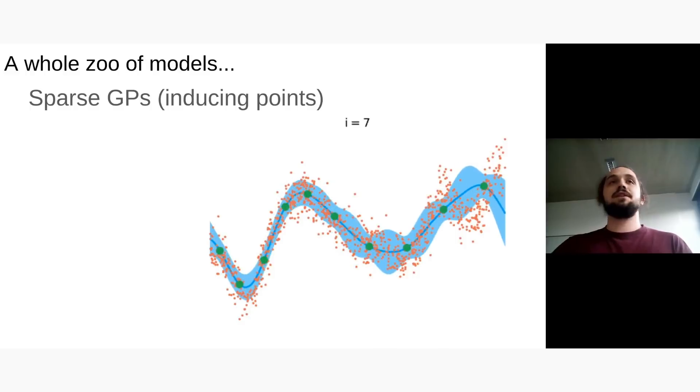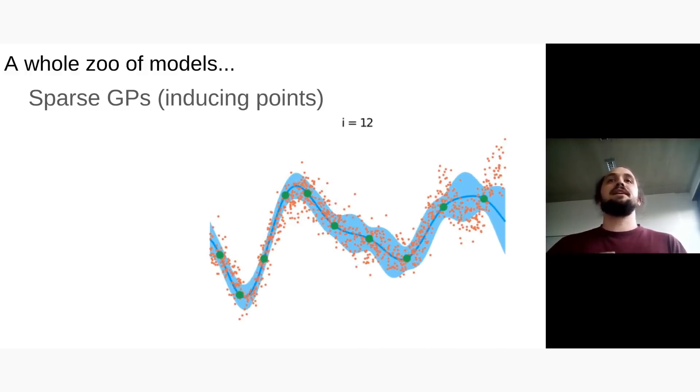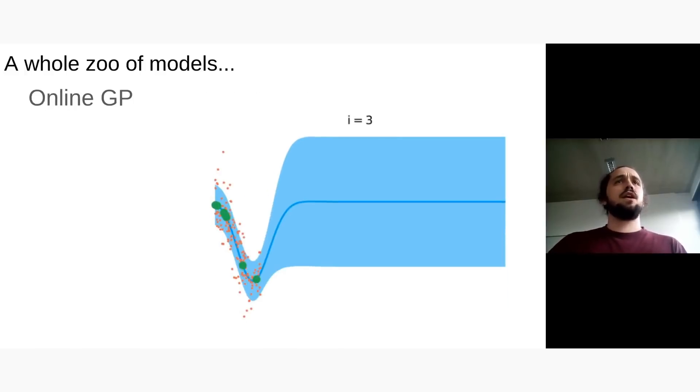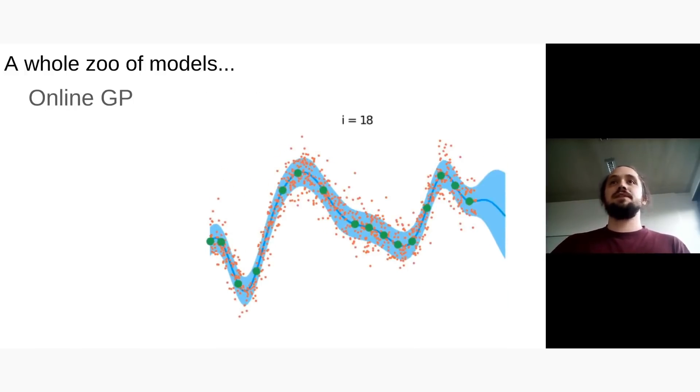So I was speaking about the GP world. In terms of models, for example, you have sparse GPs which are basically making GPs scalable for larger amounts of data. Online GPs if you want to work with streaming data.